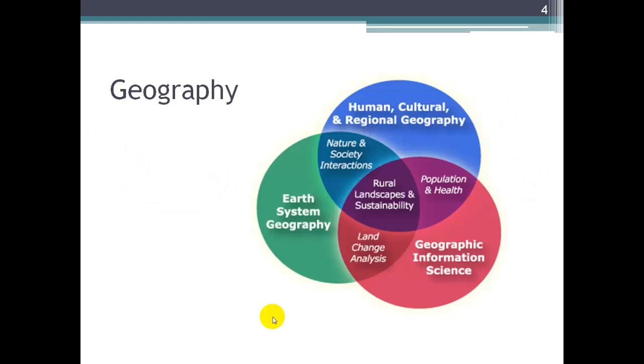We break geography into two classic spheres. The blue one, which is human or cultural geography, and the green one, which is earth or physical geography. And you can see the overlapping disciplines in there, the nature and society interactions, the rural landscapes and sustainability. And then this red circle is geographic information science, or geographic information systems, as the discipline is known.